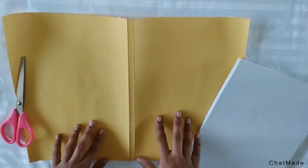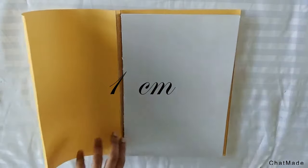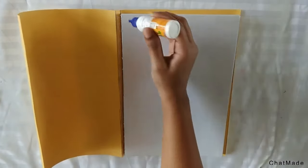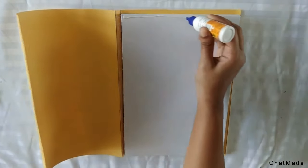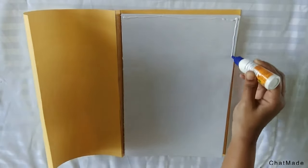So in the middle of the colored paper I'm leaving one centimeter space for the spine of the book. I'm applying glue to the front and the back page and sticking the cover to the pages.